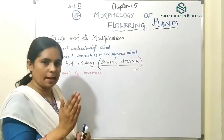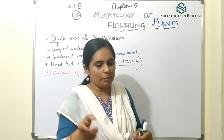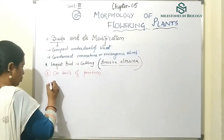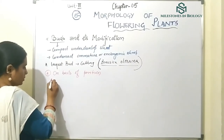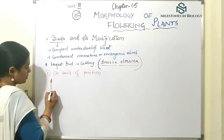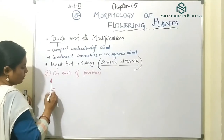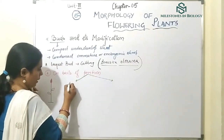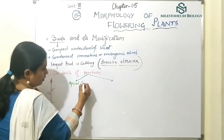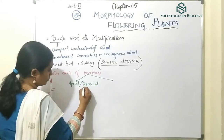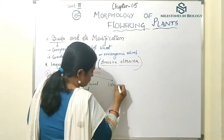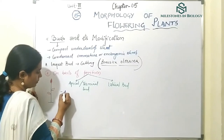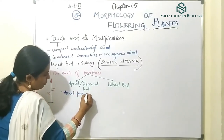On the stem, there are two types of buds you will see. One is at the apex — the apical part — and the other is present at the sides of the stem. On that basis, we classify them into two categories: one is apical or terminal bud.